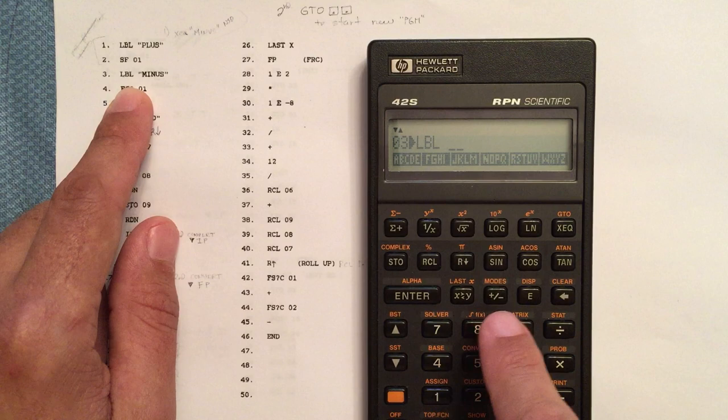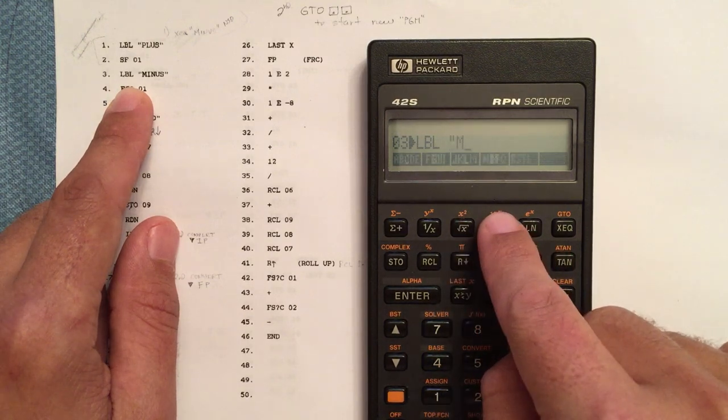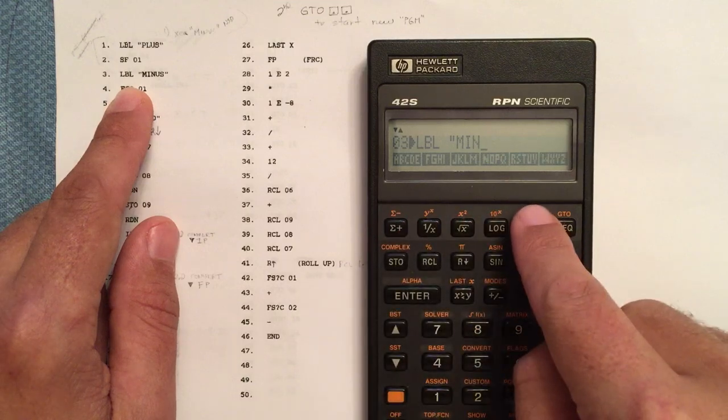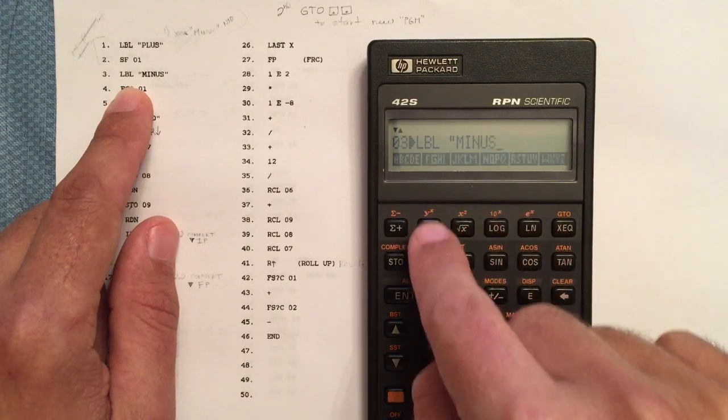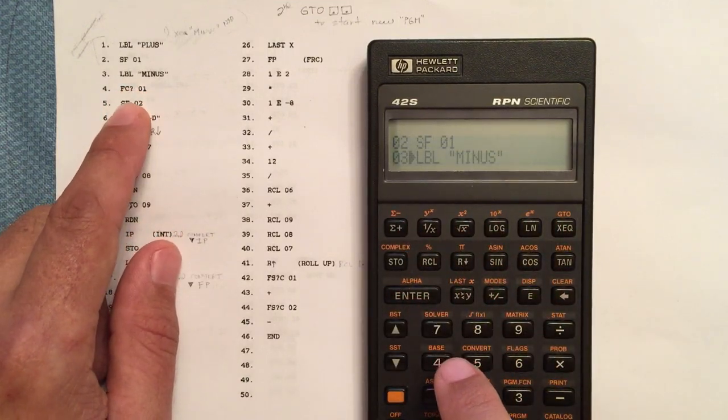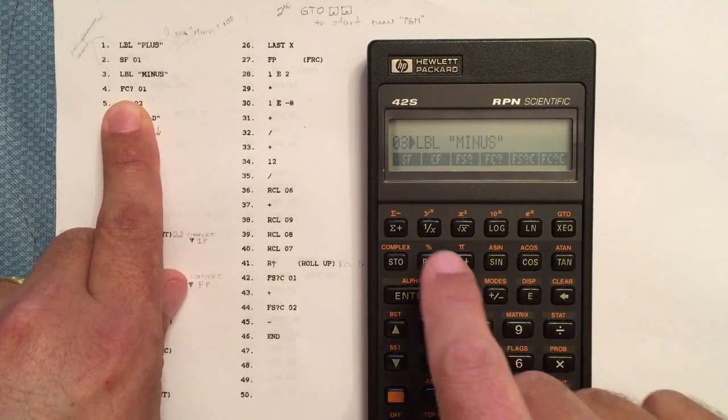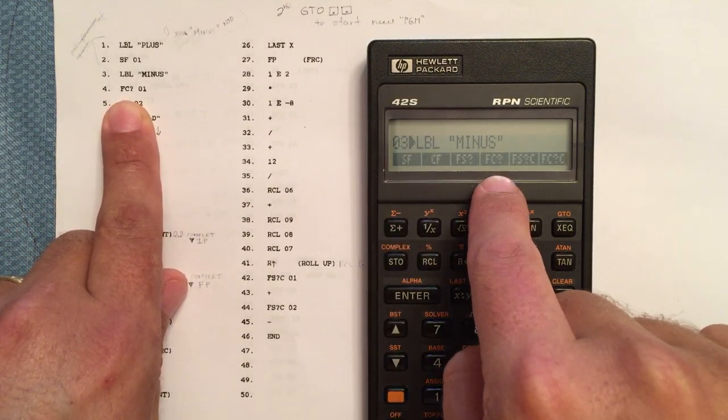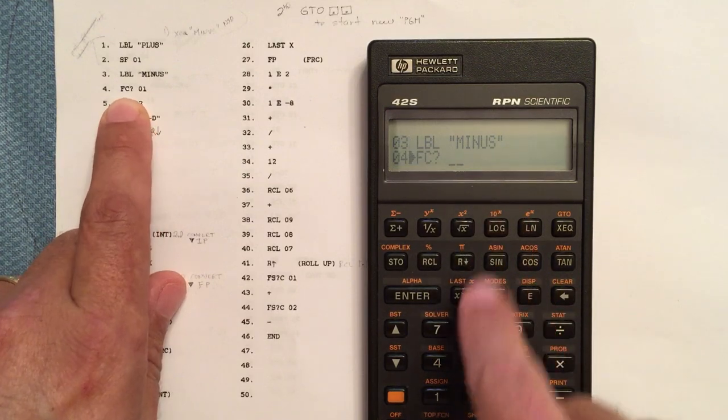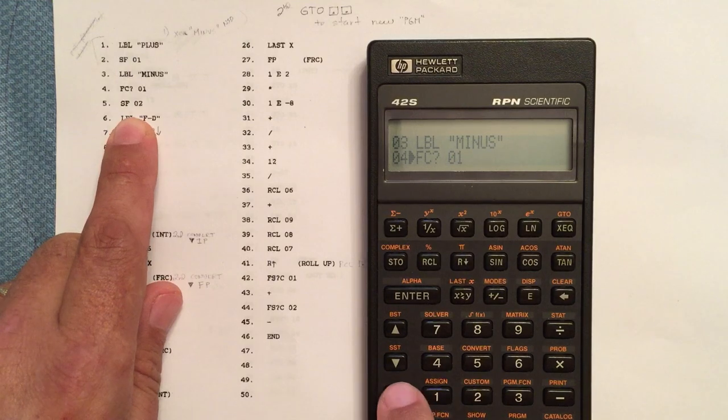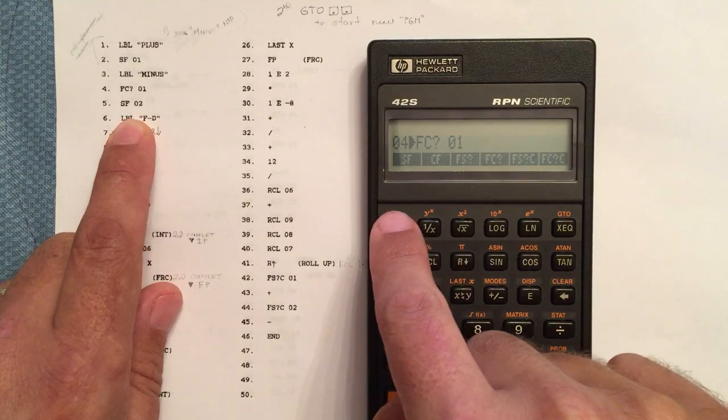And then M-I-N-U-S. Minus is flag clear, so we look for flag clear and enter in the flag we want, 01. Set flag, and that's going to be under the flag menus, set flag 02.